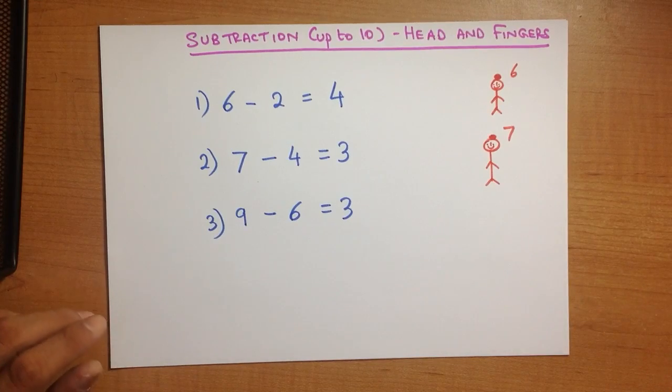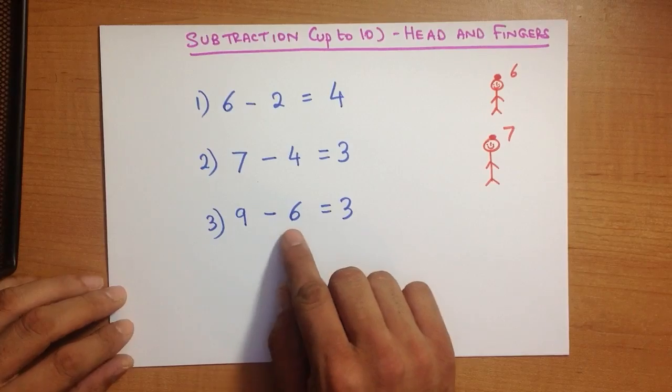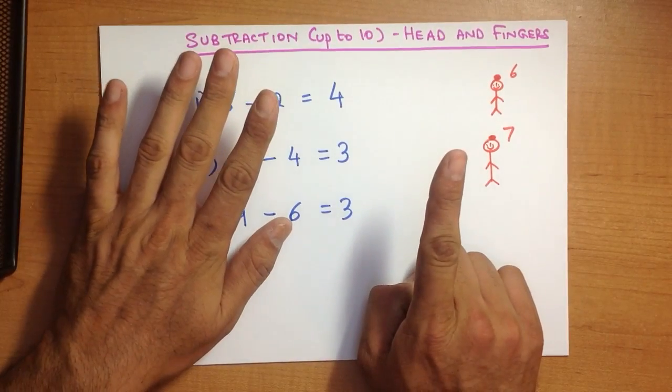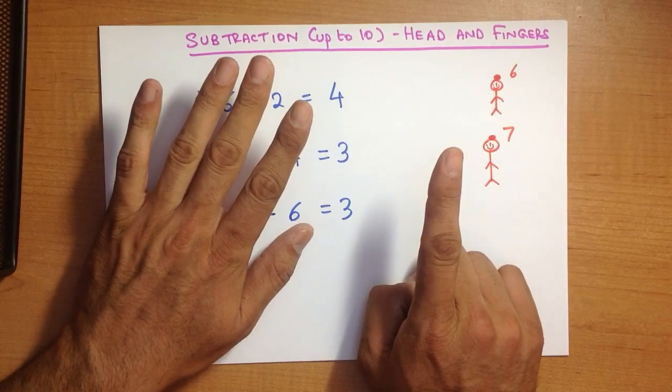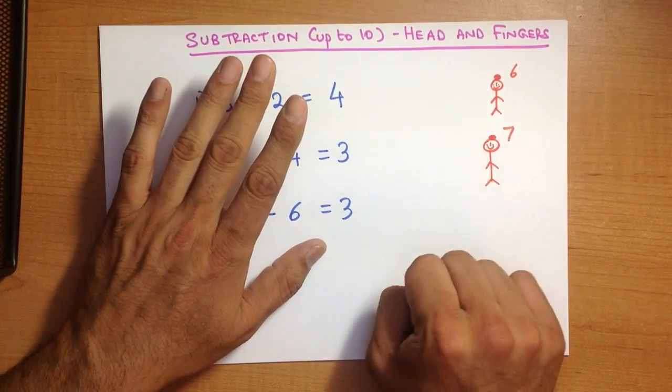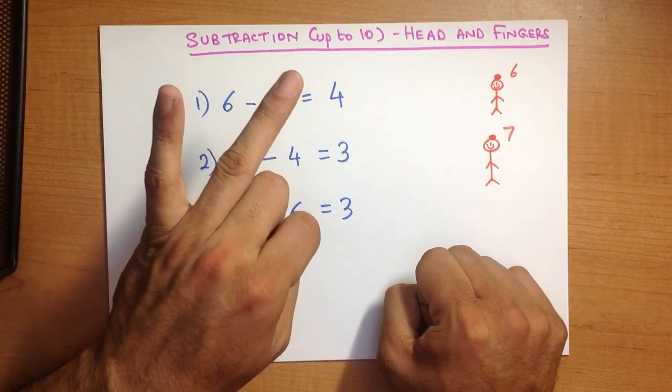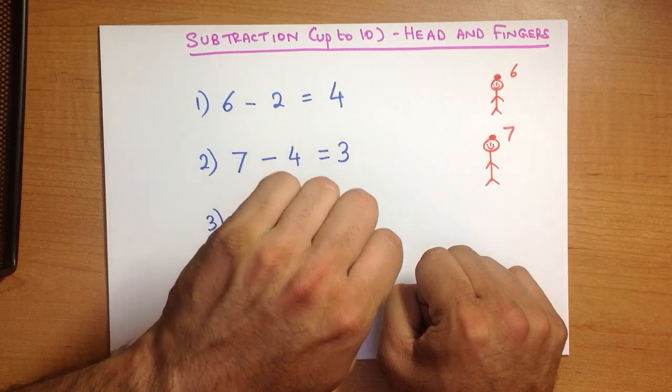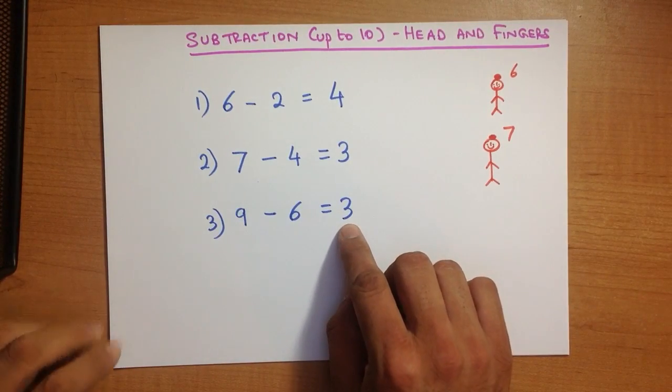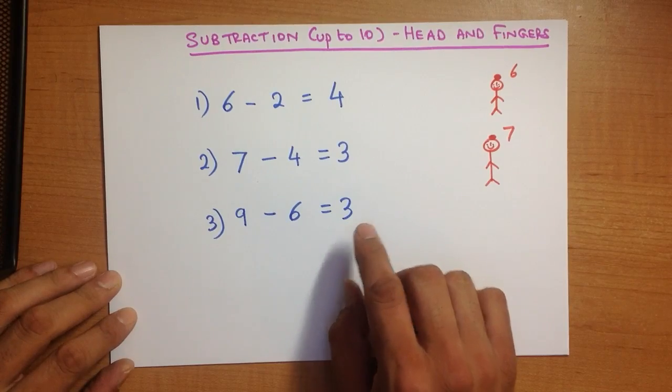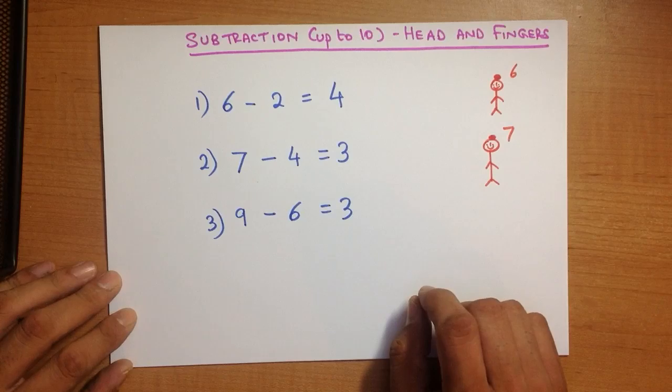Let's do that last one again. 9 minus 6: 9, 8, 7, 6, 5, 4, 3. And that is our answer: 3. And using the head and fingers method is very good for mental arithmetic.